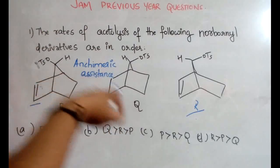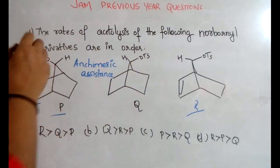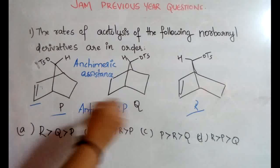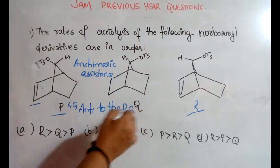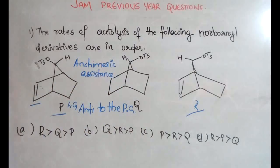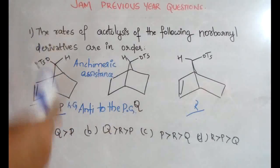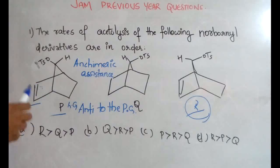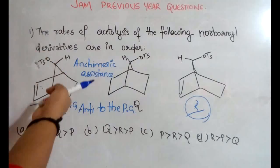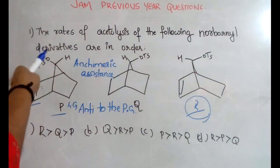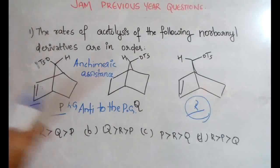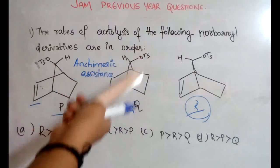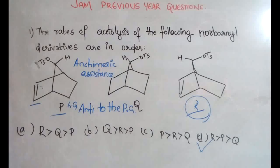Both P and R have neighboring groups — double bonds — that can help in this reaction. Whenever the leaving group (LG) is anti to the participating group (PG), the rate is enhanced. So R has the highest rate, followed by P, because there is anchimeric assistance, but less so since the group is on the same side as the double bond. Q has no neighboring group participation. The order is R > P > Q.